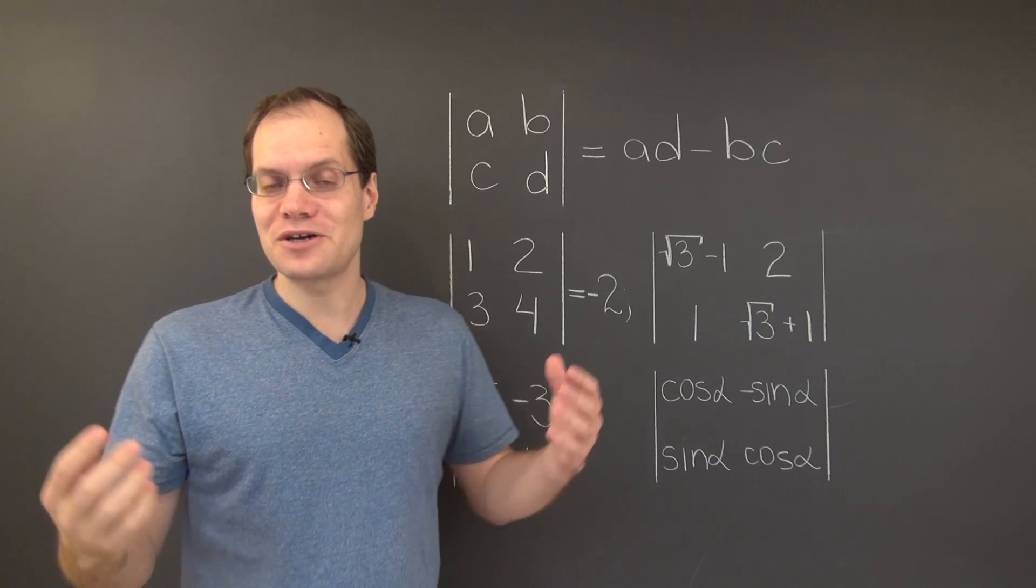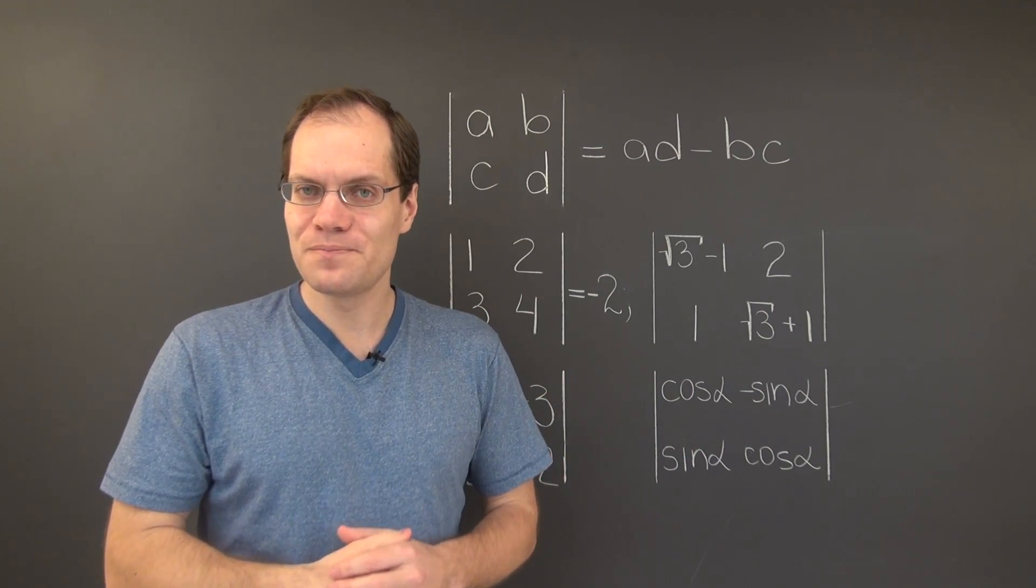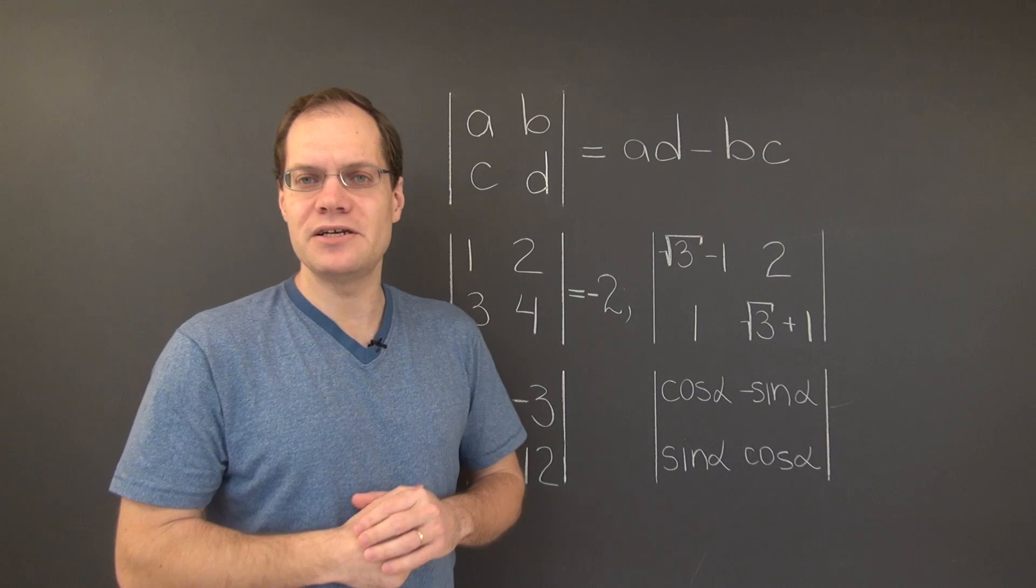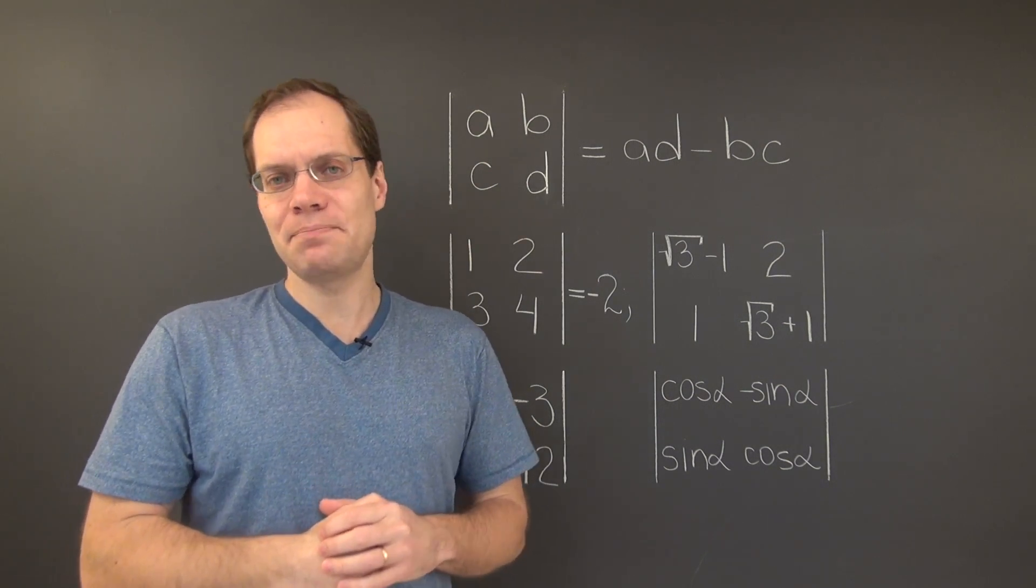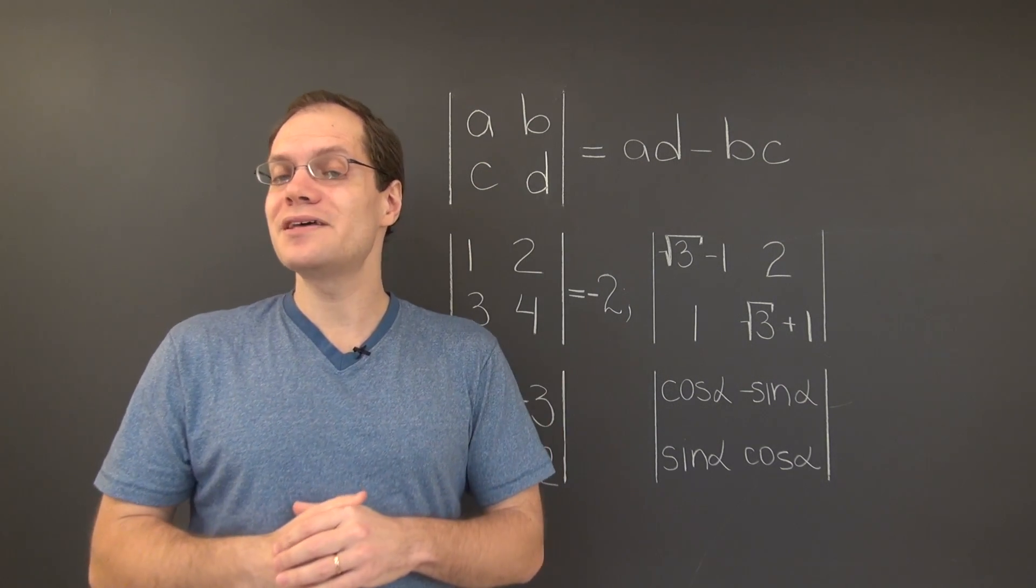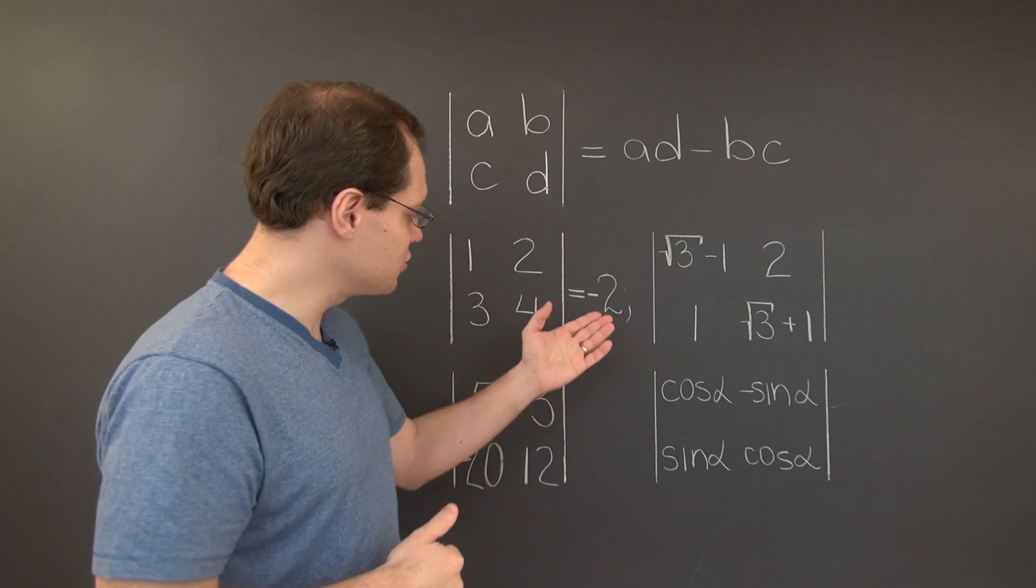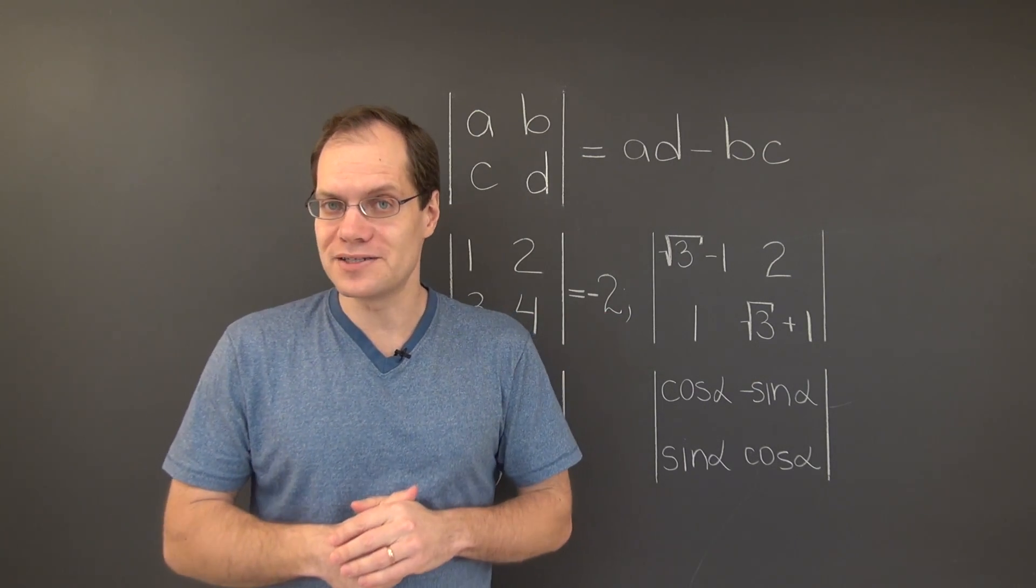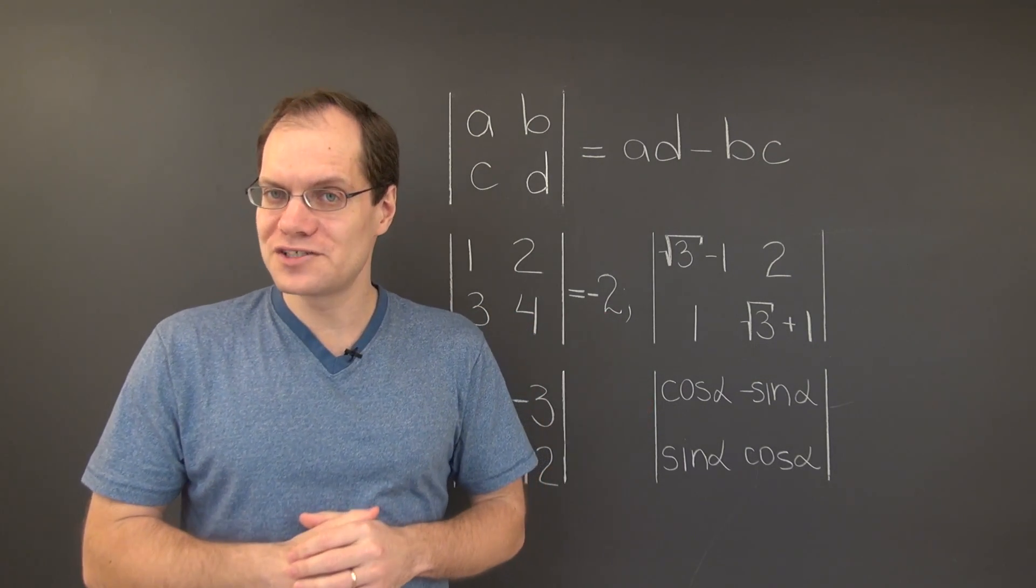Because negative 2 is not 0, the determinant tells us that the columns of this matrix are linearly independent. That's something we knew to begin with, but the determinant helped us confirm it. We're done with the first example.